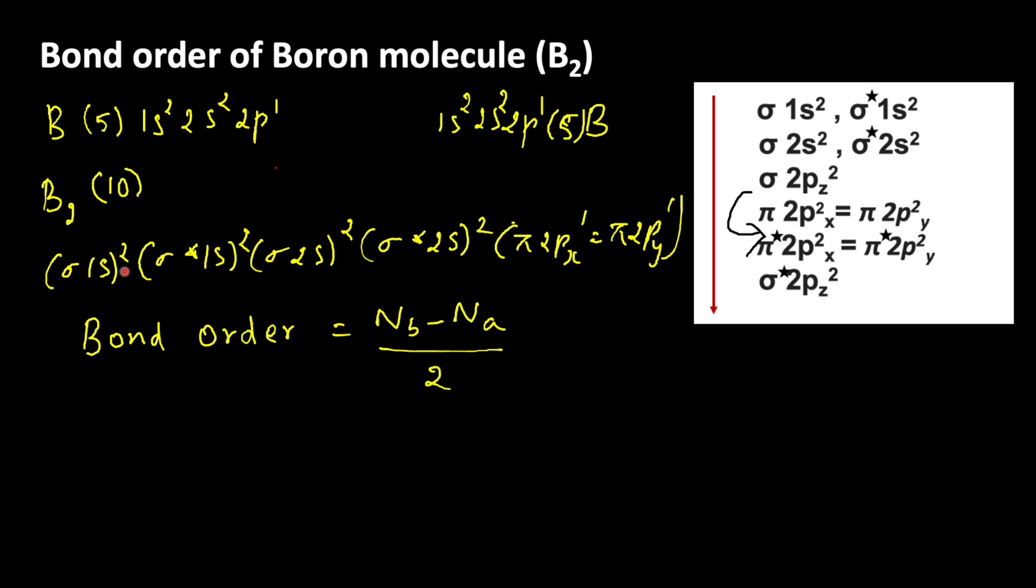The electrons which are present in sigma 1s and sigma 2s orbitals are called bonding electrons. Electrons which are present in sigma star 1s and sigma star 2s are called anti-bonding electrons. Let us count.